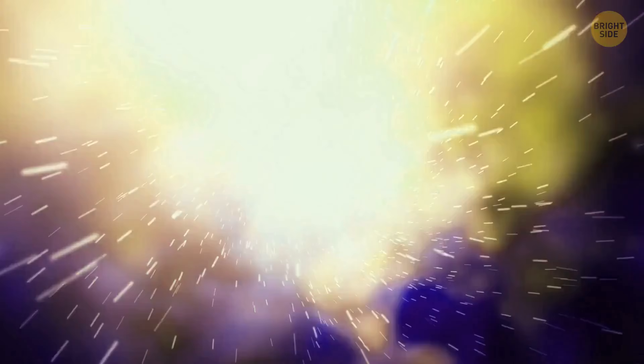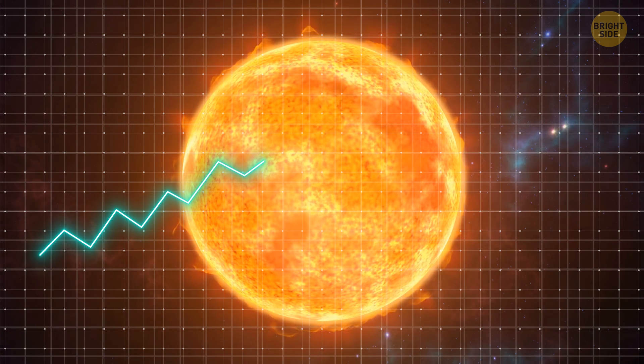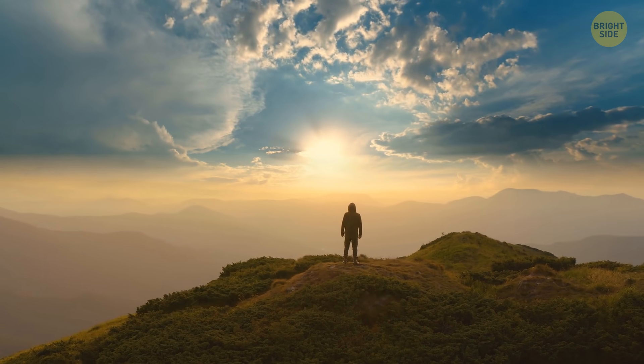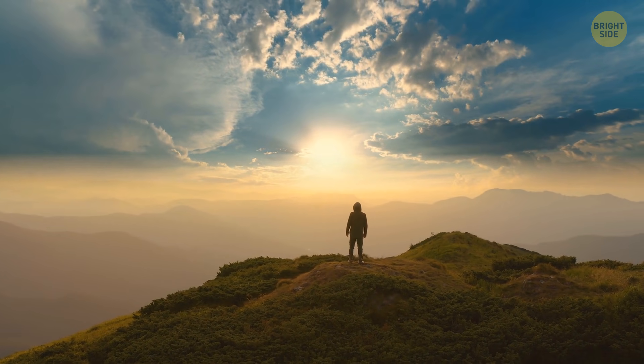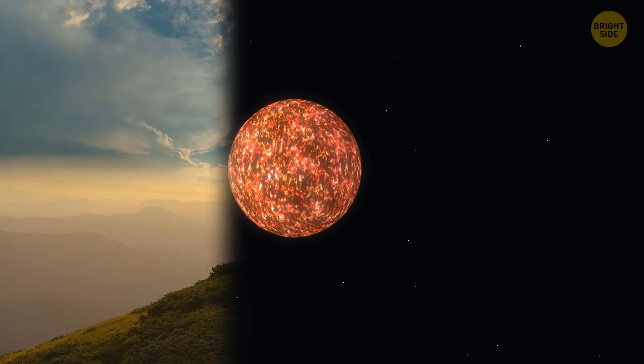If the sun blew up, chaos would ensue in our solar system. But scientists tell us that it will certainly happen one day. But why? How exactly would events unfold? And is it possible for us to somehow survive this event? Hey, let's delve into it.